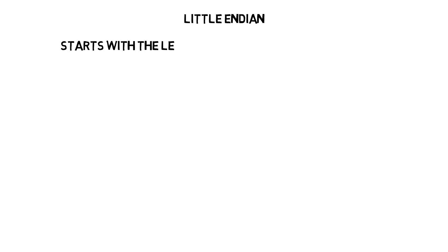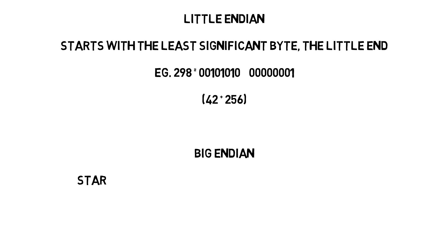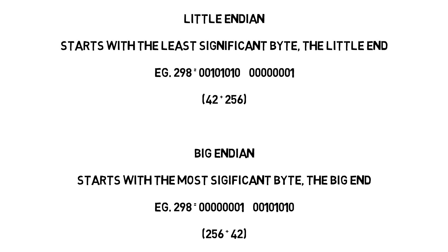And that's where we are with Intel processors today — they use this little endian system. Little endian means that at the beginning of the word is the little part, the little end. In a big endian system, you start with the most significant byte at the beginning — the thousands, the hundreds of thousands, the millions — so it depends on whether you're starting with the least significant or the most significant part.